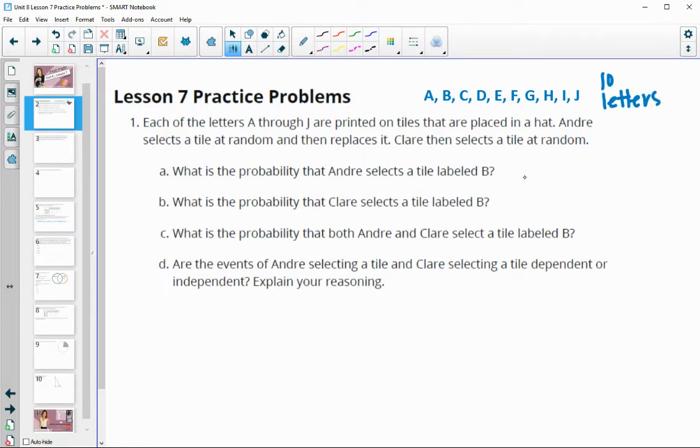What is the probability that Andre selects a B? Well, there's one B out of 10, so that's a one out of 10 probability or 0.1. Then Andre puts the B back into the letters, so Claire has the same letters to choose from. What is the probability that she selects a B? That is going to be one out of 10 as well, or 0.1.